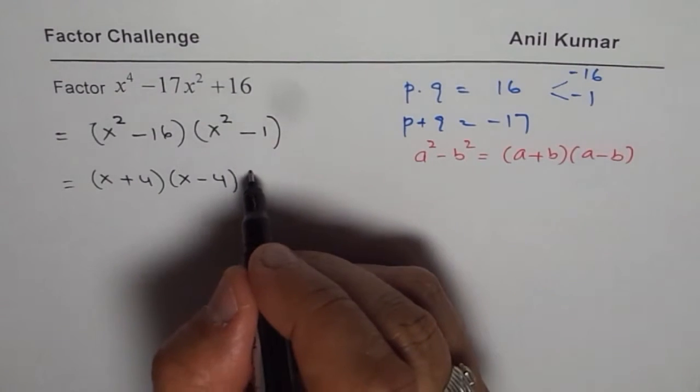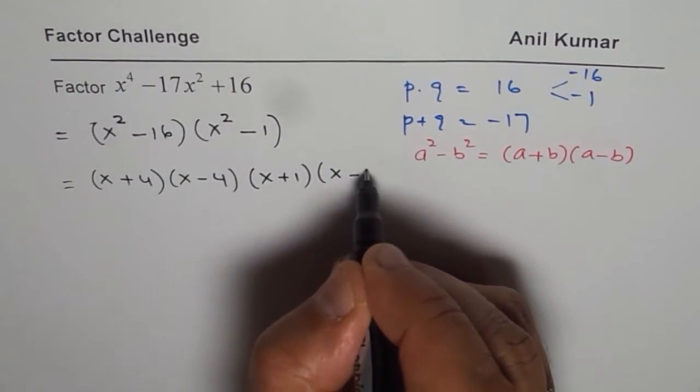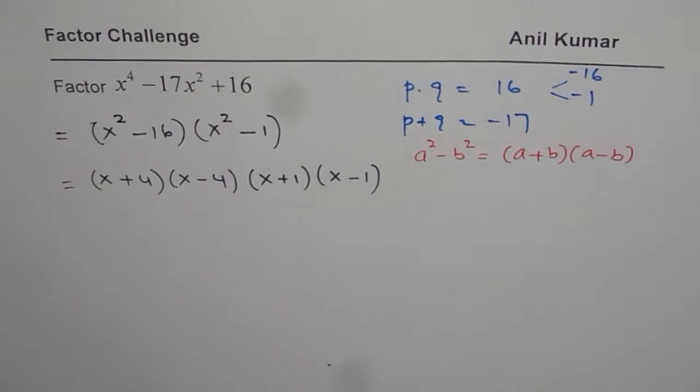But x squared minus 1, we could write this as x plus 1 times x minus 1. So that is how we can factor the given trinomial.